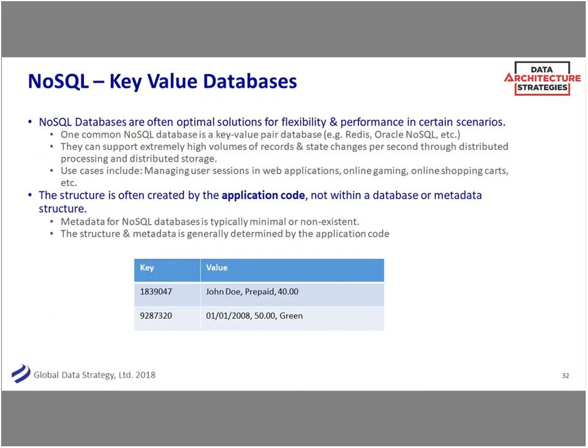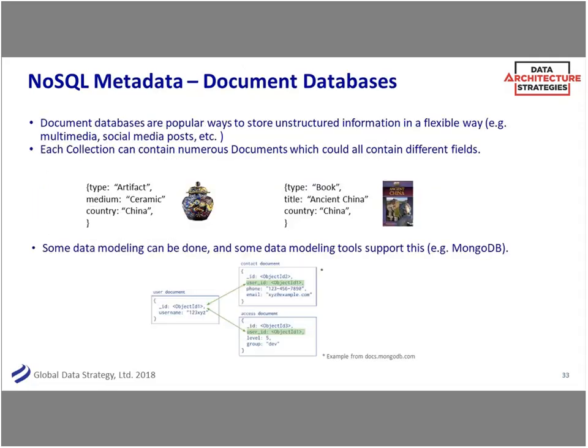NoSQL is a huge swath of things. For key-value databases, they can be amazing and fast, but metadata is not one of their strengths — you really just have keys and values, and it's often the application code that adds metadata. It's not like a relational database that has a structure like your COBOL copybook. Some NoSQL databases do better — a document database like MongoDB has much better metadata, and some modeling tools support that structure with tags and different types.